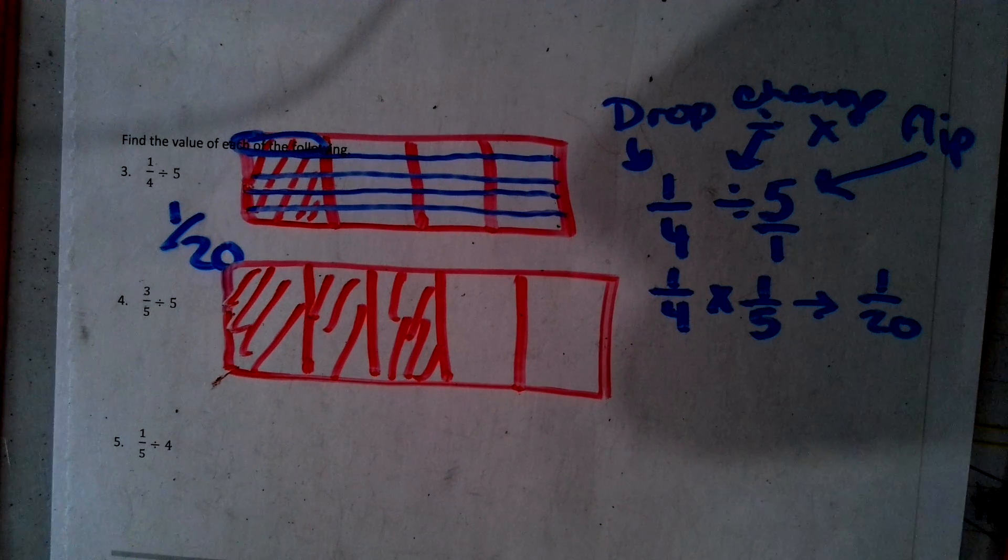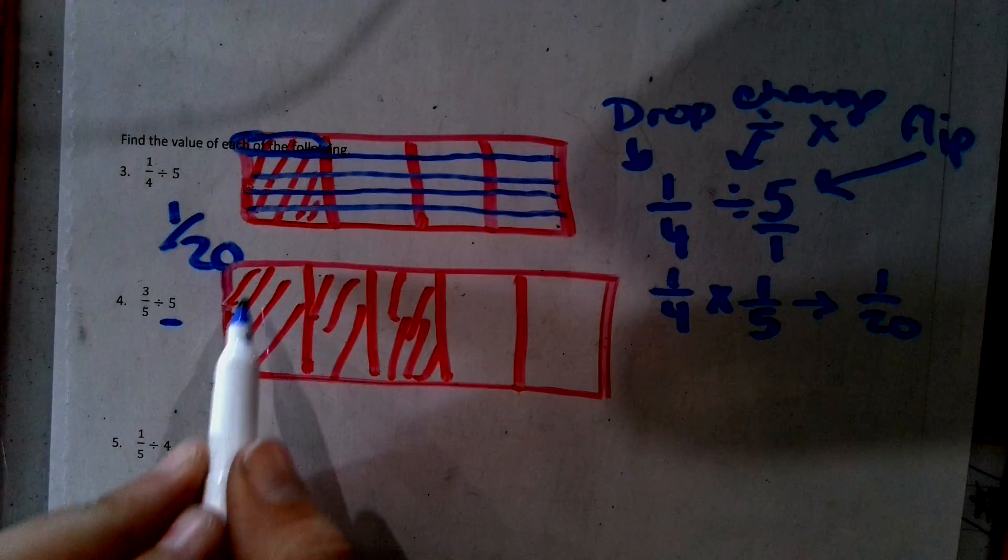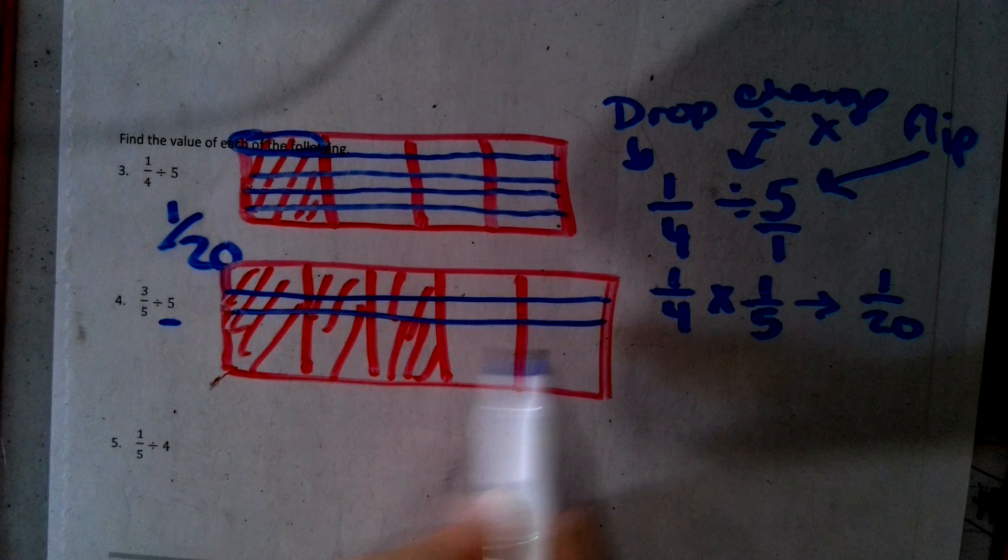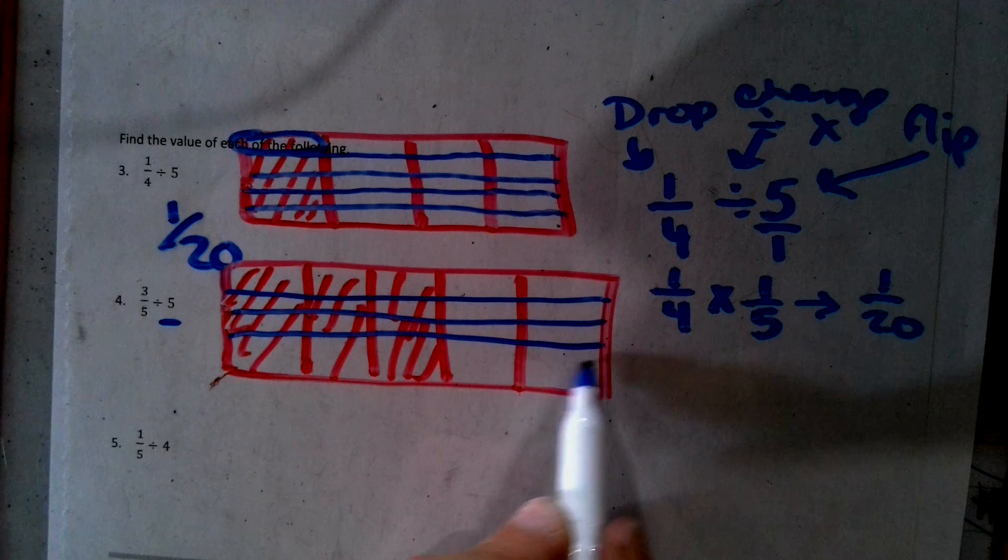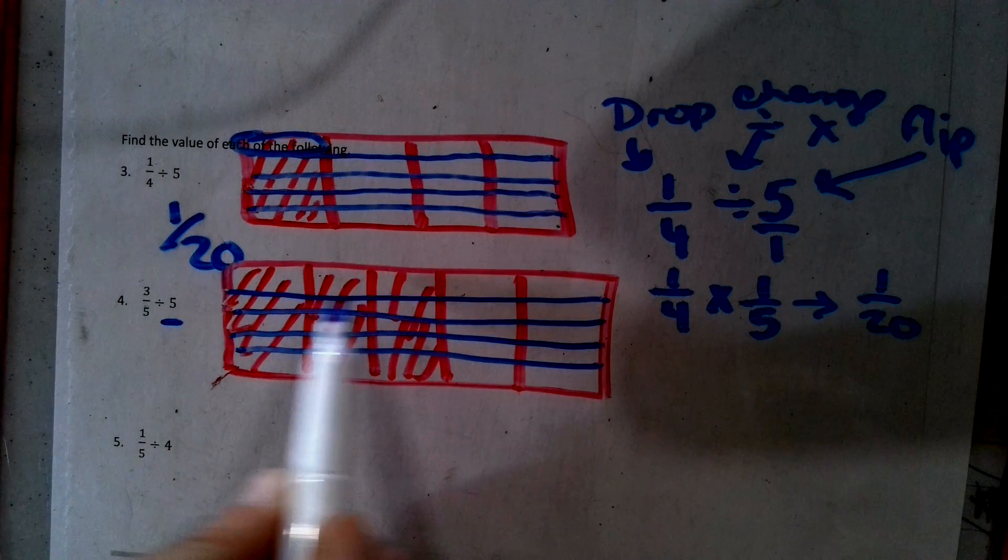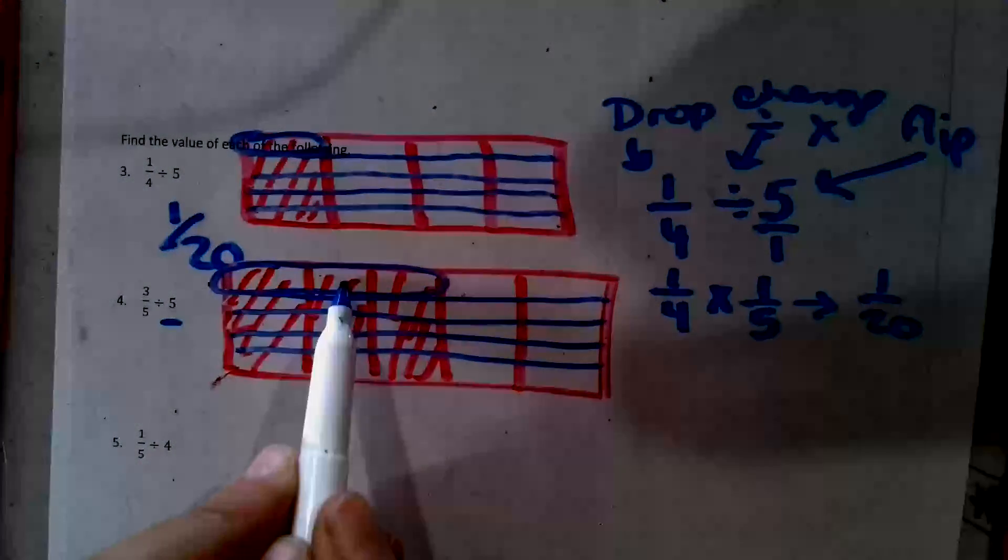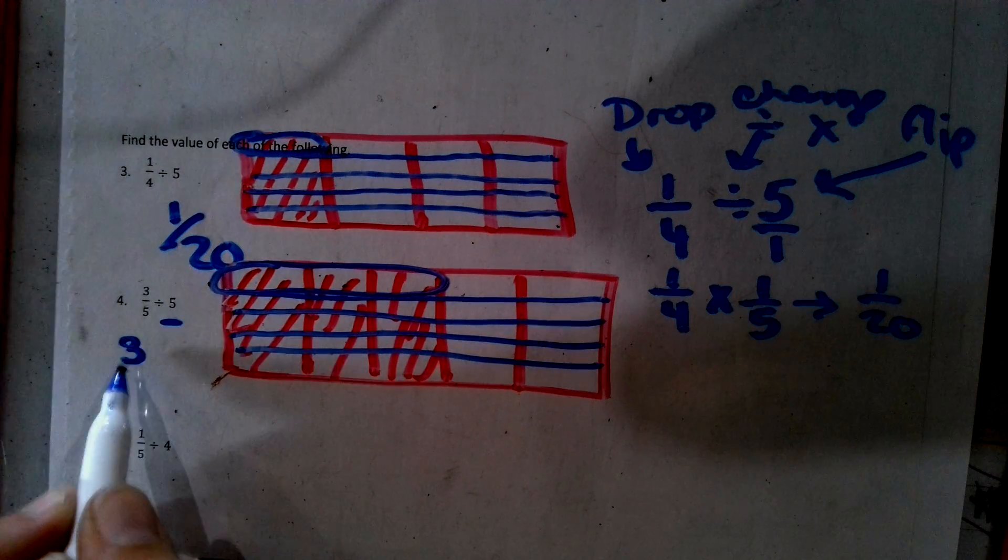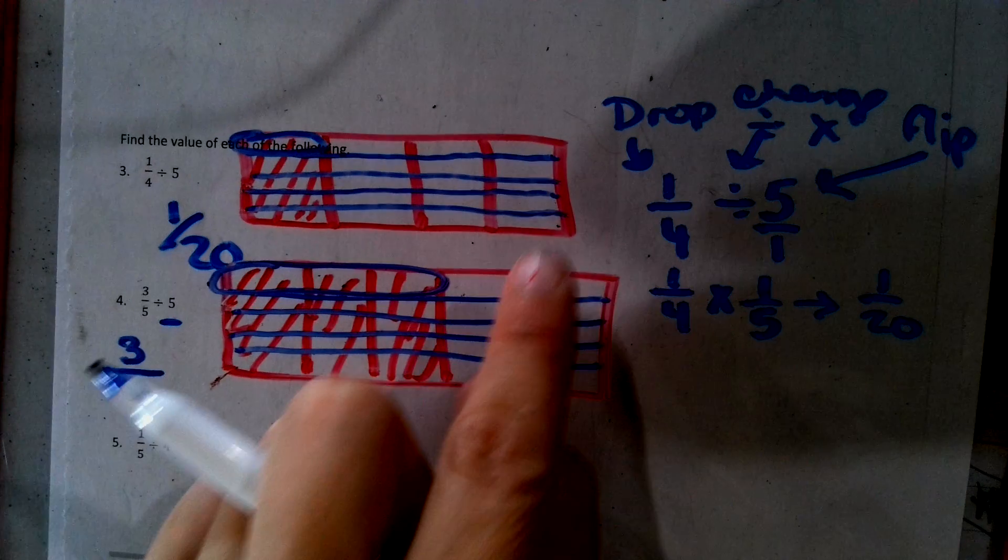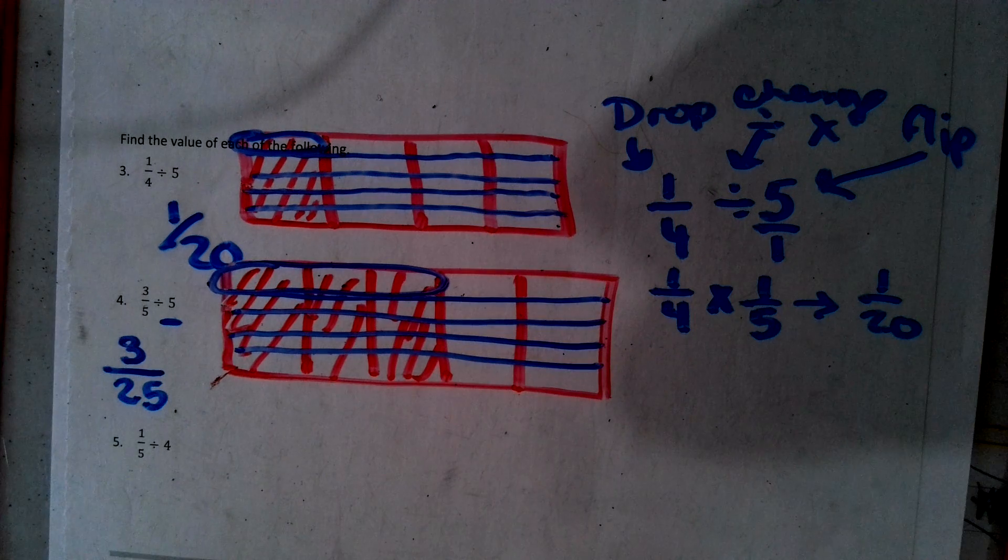Okay. Now I have to split my 3/5 into five sections. So one, two, three, four, five. Okay. So now one section following this blue line is worth three parts. See that? Three. One, two, three. So my answer is three. And then there's five, ten, fifteen, twenty, twenty-five. So 3/25 is my answer there.